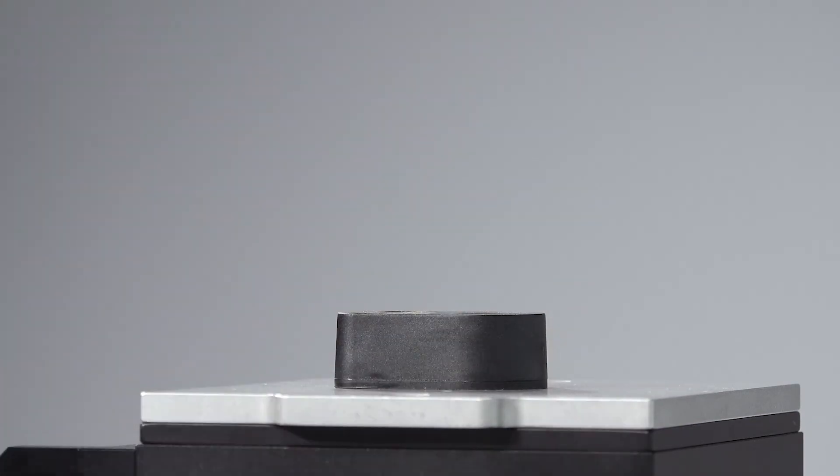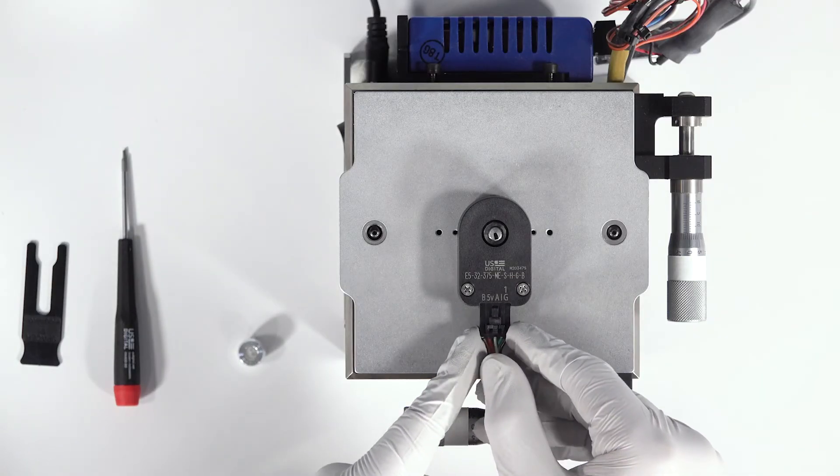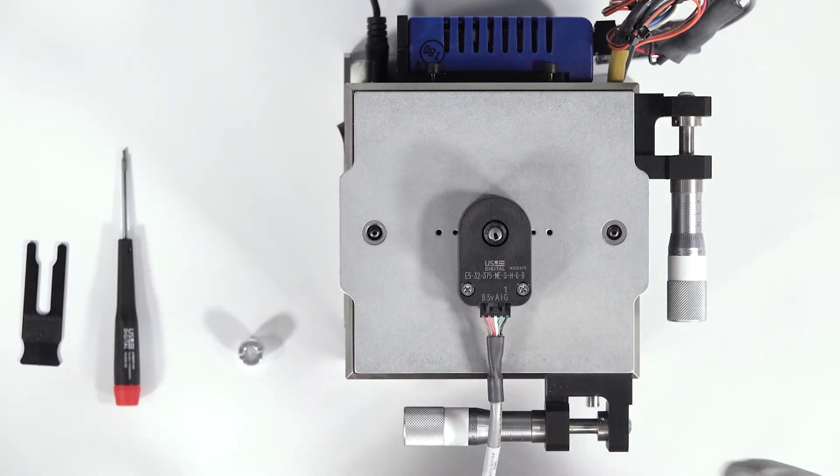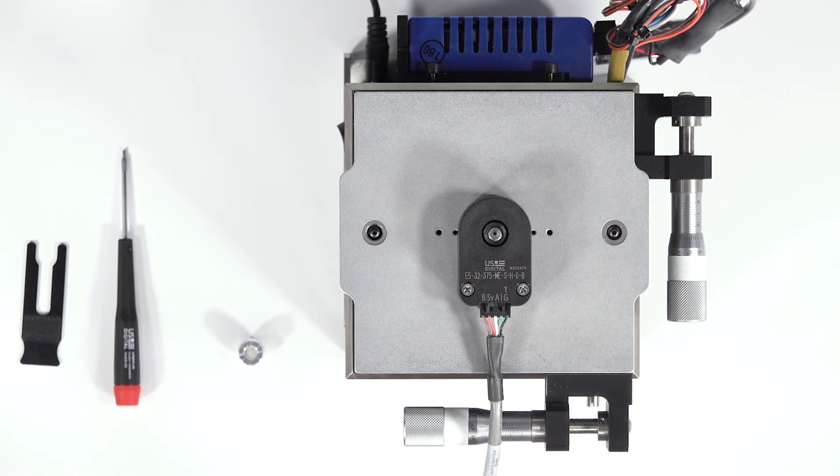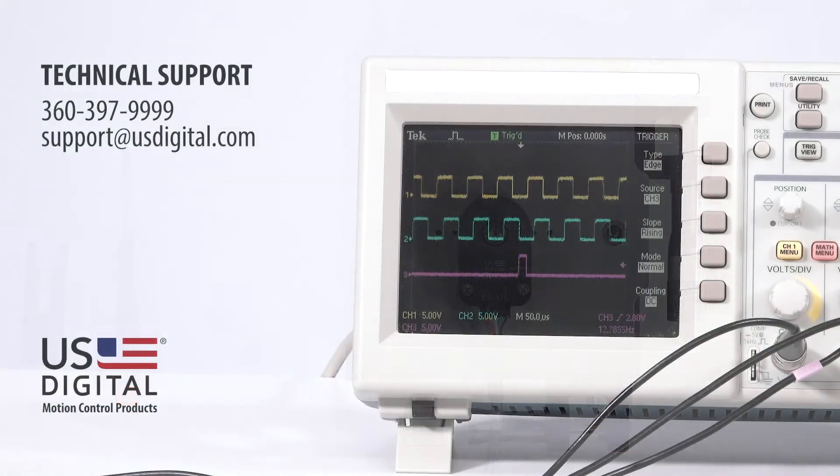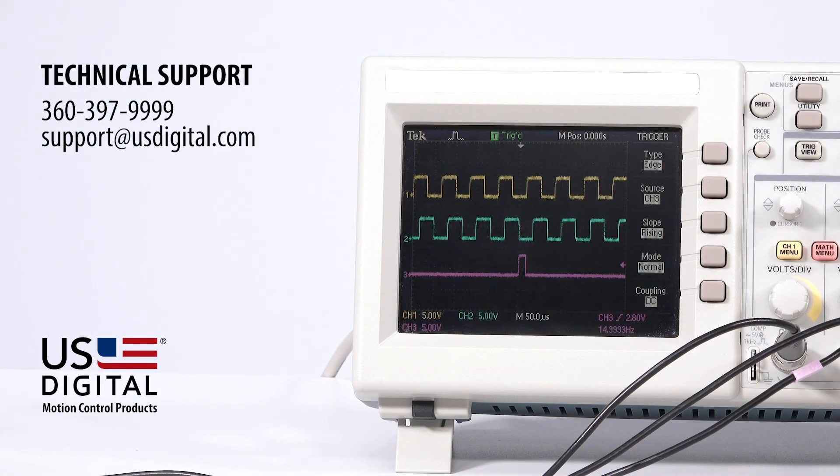Your E5 encoder is now ready for use. If you have any additional assembly questions, please contact our technical support team at 360-397-9999 or email support at usdigital.com.